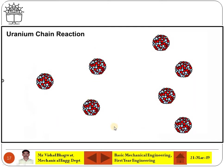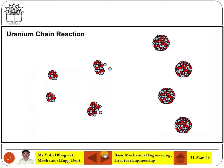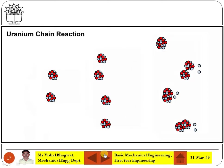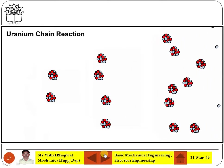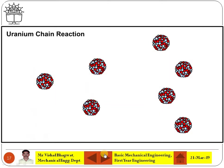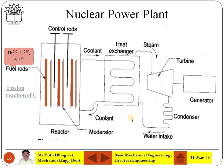That heat is used for a specific purpose — to convert water into steam, and the steam is used to run the turbine, which drives the generator to produce electricity. That is the overall scheme here.